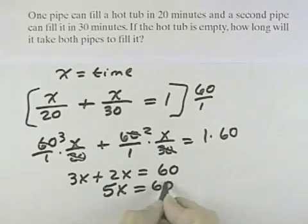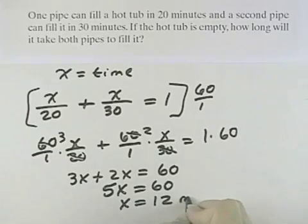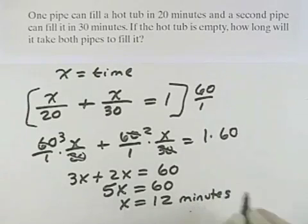So 5X equals 60, which means X equals 12, and so it would take 12 minutes if you have both of your pipes working together to fill the hot tub.